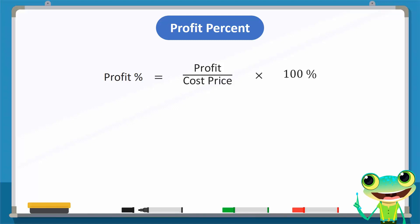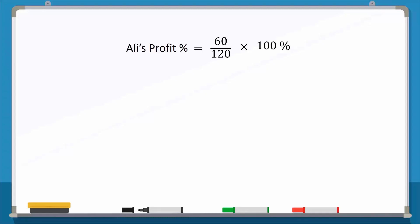To calculate the profit percent for Ali's pen, we first write the profit, which is 60 rupees. Then we divide this by the cost price, which is 120 rupees, and multiply this with 100%. 60 divided by 120 gives us 0.5, and multiplying this with 100% gives us 50%.